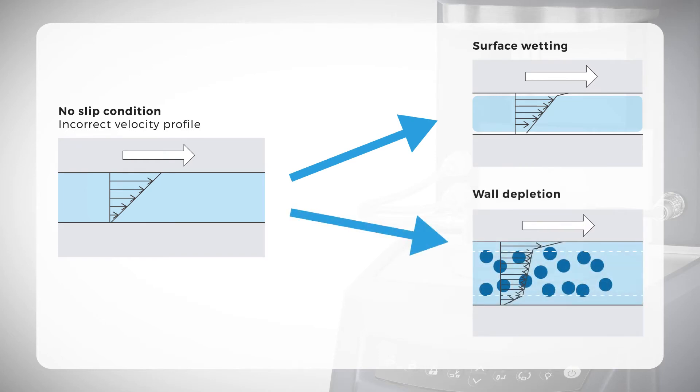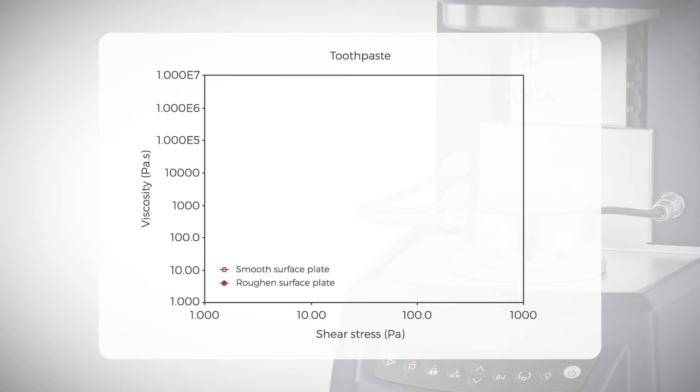Wall slip could either be caused due to surface wetting or wall depletion. When wall slip occurs, it shows the measured viscosity lower than the actual viscosity of the sample. Wall slip can also create an artifact lower yield stress.